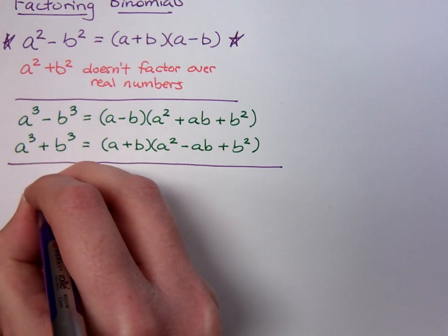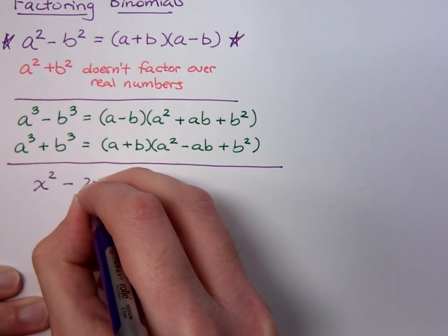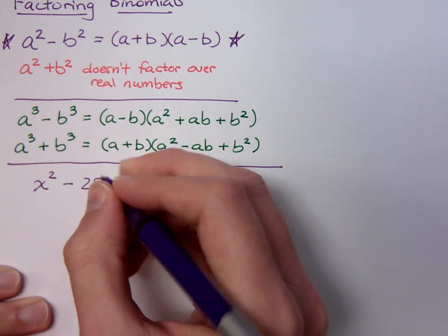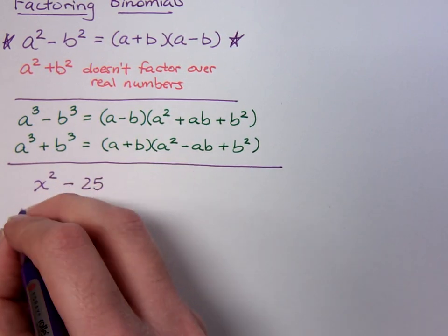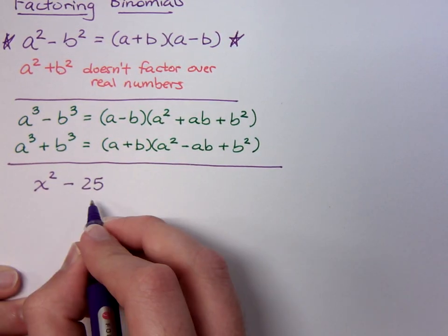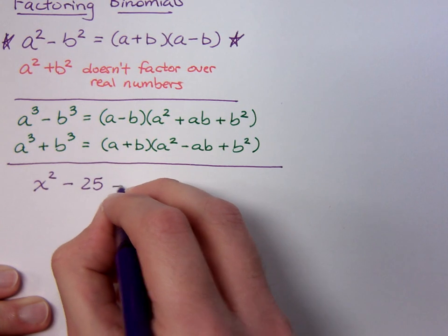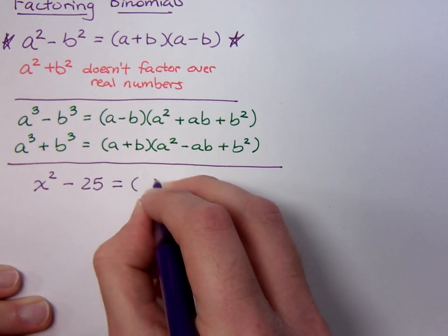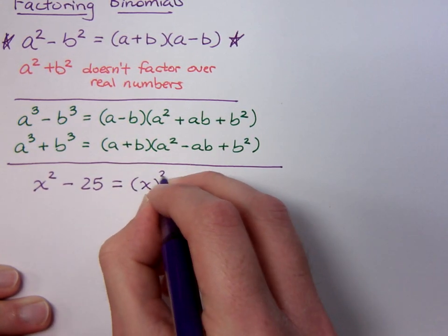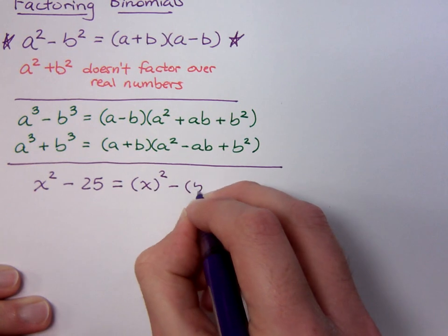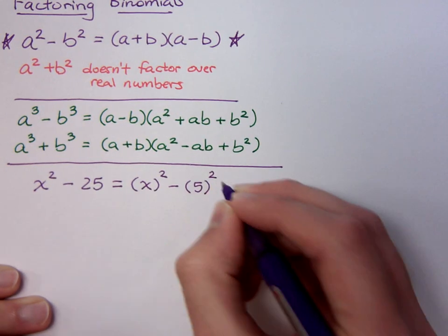Here's what we need to be able to see. If I have something like x² - 25, I need to be able to see, is this a difference of two squares? Now sometimes it's easy for us to see that this guy is x² - 5².